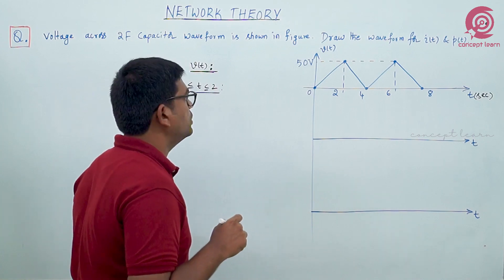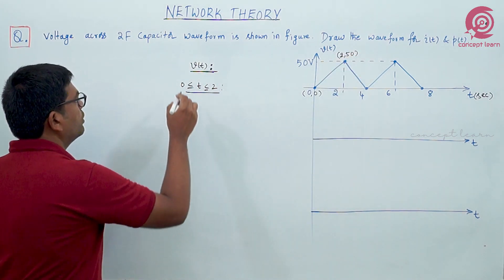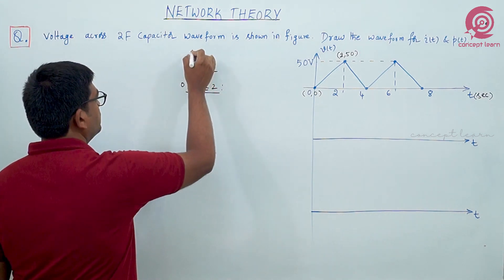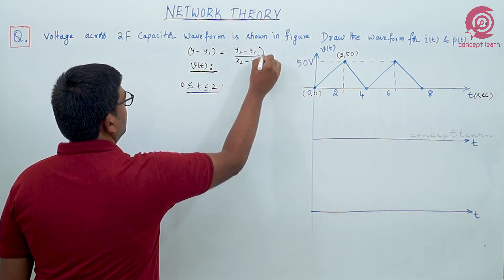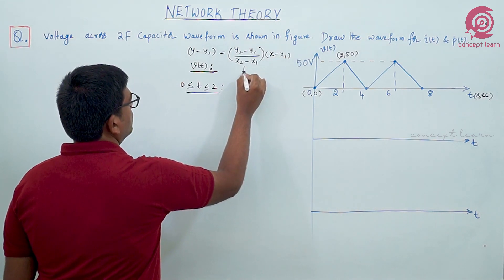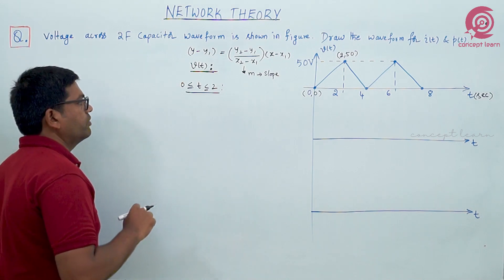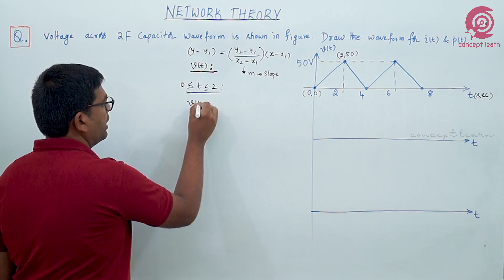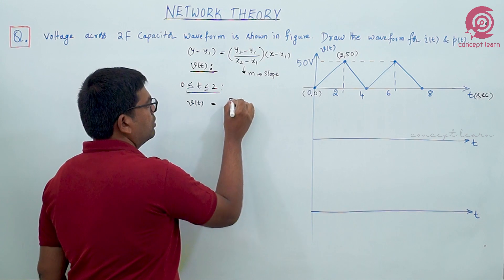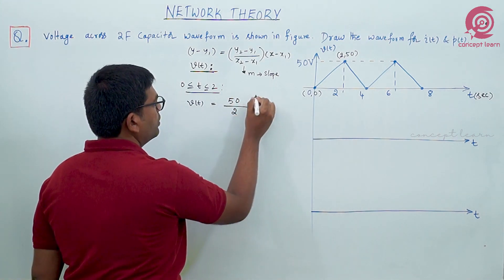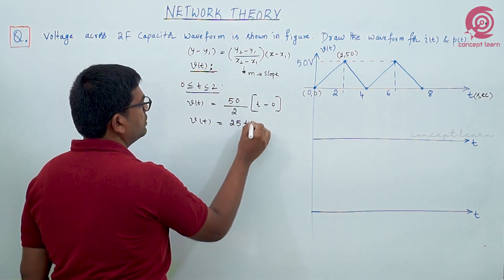For the interval 0 to 2, I am following the x1,y1 and x2,y2 concept. The equation we use is: y minus y1 equals (y2 minus y1) divided by (x2 minus x1), into (x minus x1). This gives the slope m — it is essentially y = mx. The y-axis is voltage v(t), y1 is zero since it starts from the origin. So v(t) = (50 minus 0) divided by (2 minus 0) into t, which simplifies to 25t. This is the voltage expression in between 0 to 2 seconds.